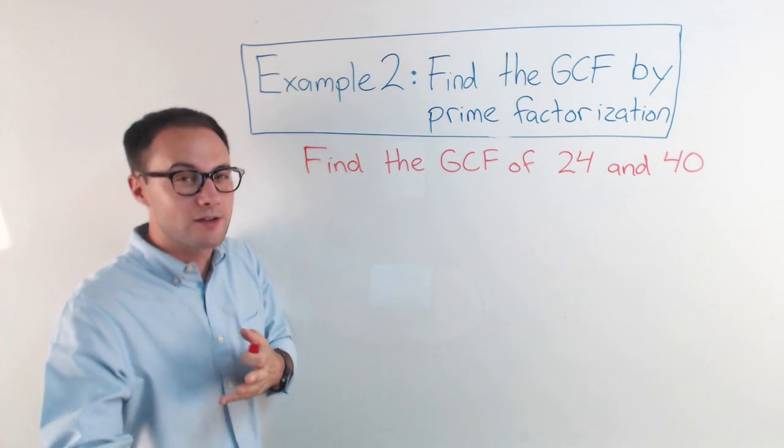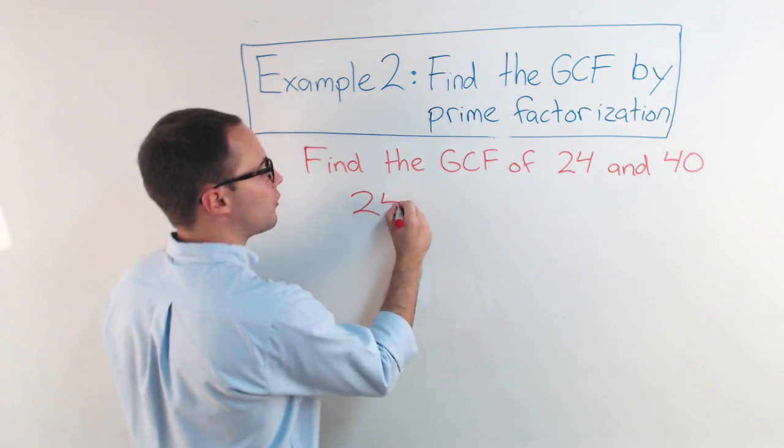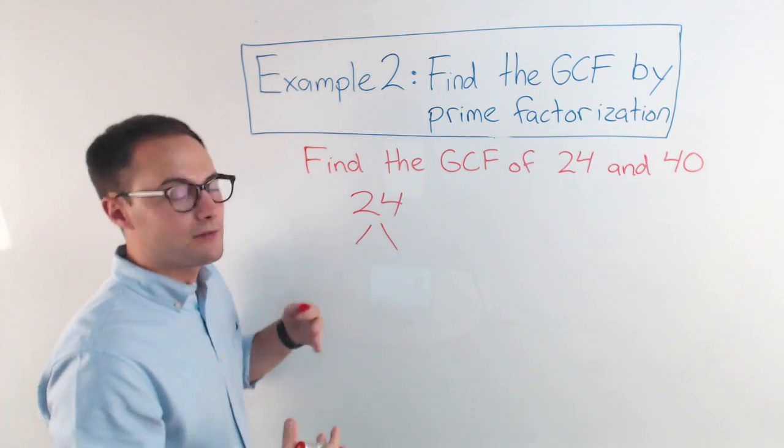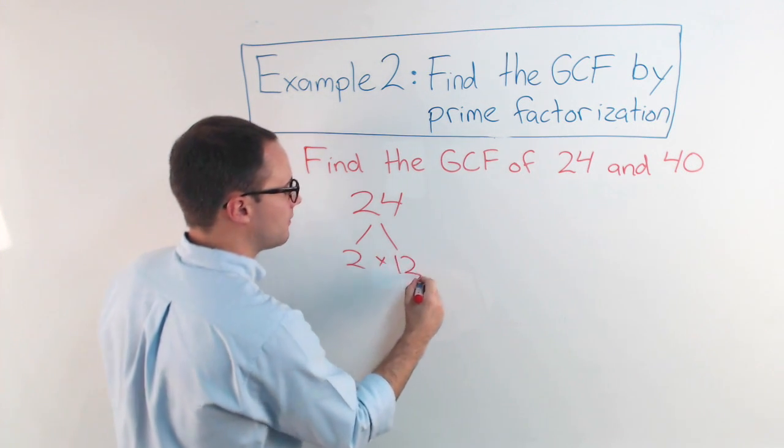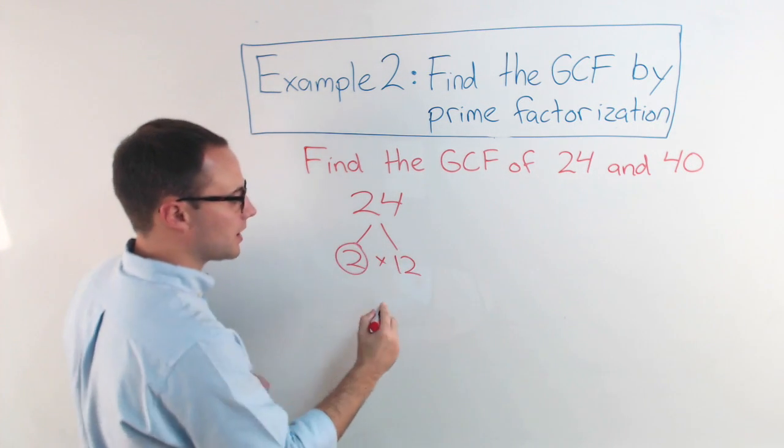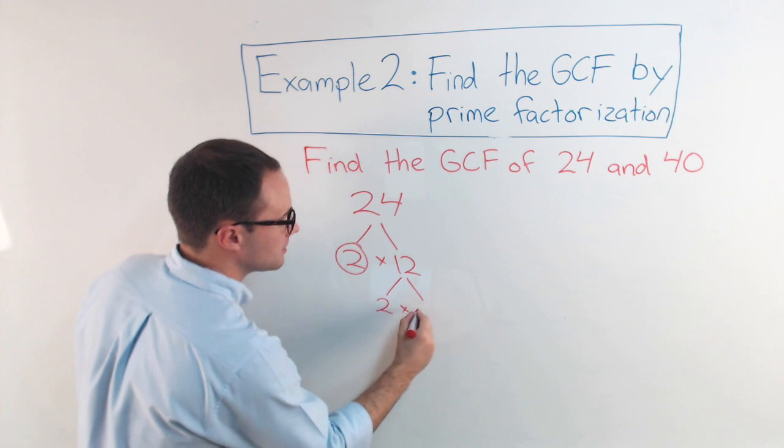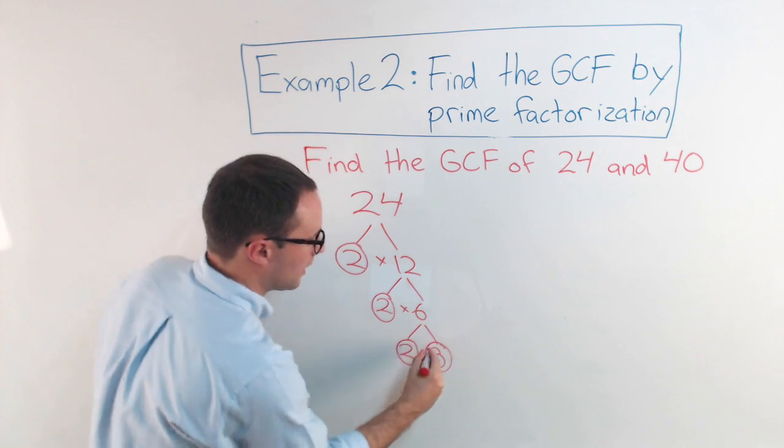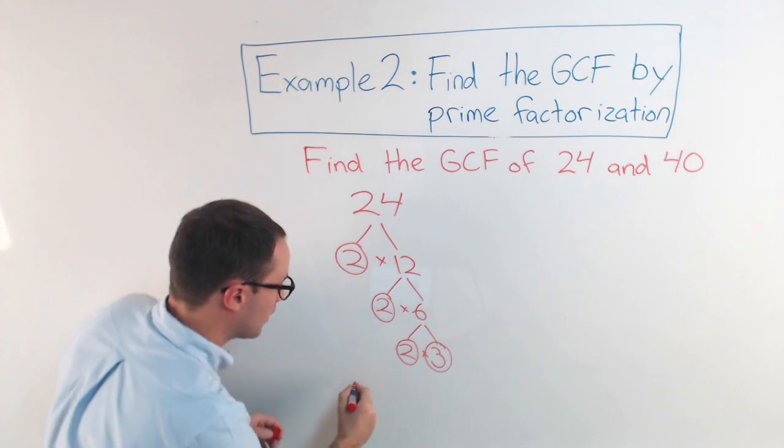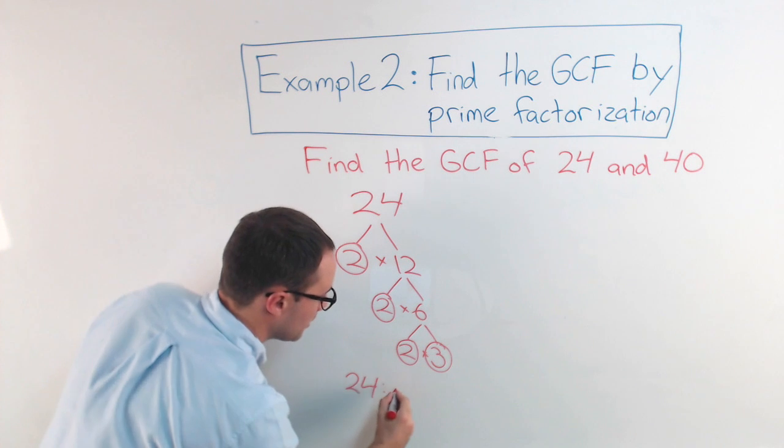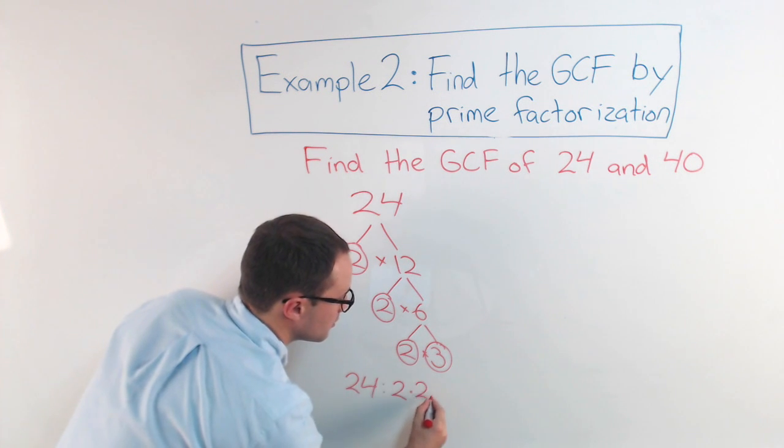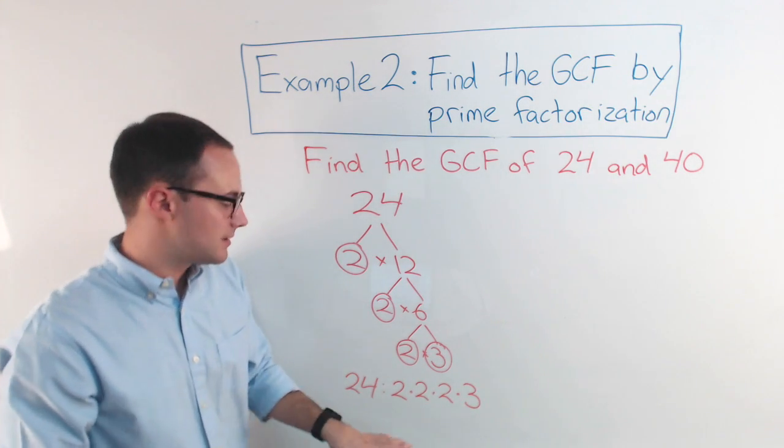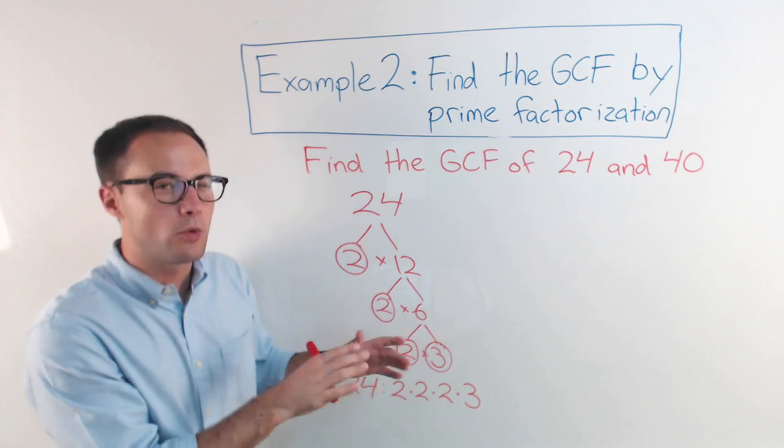If you want to pause it and try to do it on your own, go for it. So for 24, I've got lots of options of where to start. It's always easy to start with 2 when you have even numbers, so I'm going to do that. 2 times 12, that's prime, so I'm done with that. 2 times 6, done. 2 times 3, done and done. So my prime factorization of 24 is going to be 2 times 2 times 2 times 3. I'm going to leave it expanded like this instead of writing 2 cubed, and you'll see why in a second.